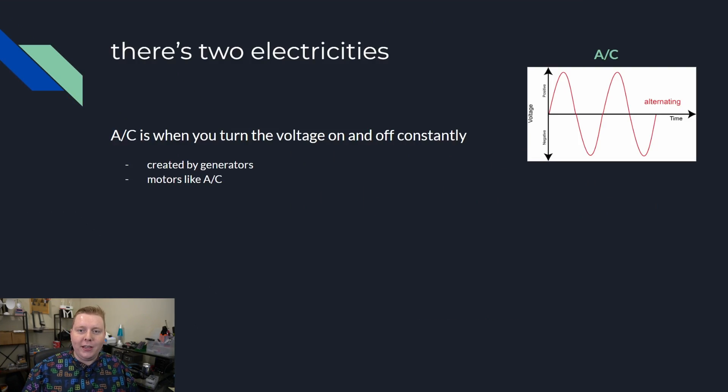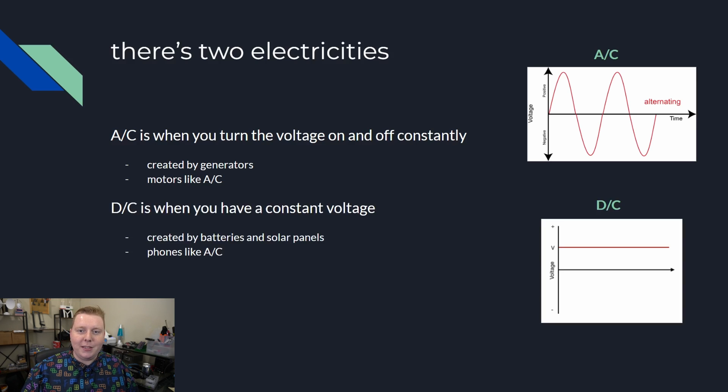There's two types of electricity. AC is squiggly, it's made by generators and it's used by motors. DC is a straight line, it's made by batteries and solar panels and it's used by phones.